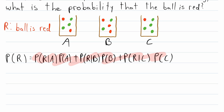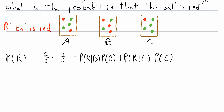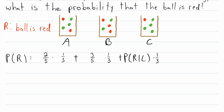And now this is a lot easier. The probability of a red ball given bag A: there are five balls in A and two are red, so that's 2/5. The probability of selecting bag A: we're randomly selecting one bag from three, so that's 1/3. The same is true for bags B and C — each has a 1/3 probability of being selected. The probability of red given bag B: there are three red balls out of five total, so that's 3/5. The probability of red given bag C: one red ball out of five, so that's 1/5.